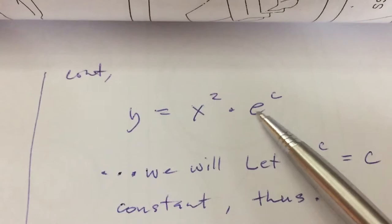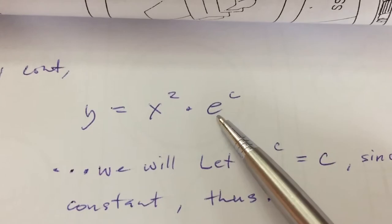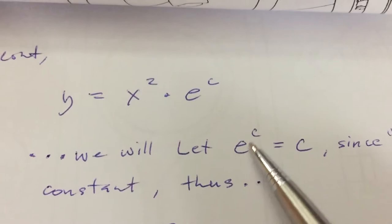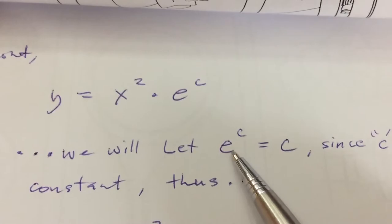x squared times e raised to the c. Although there is still an e there, we can eliminate that by letting e raised to the c equal to c, since c is a constant and it can be any constant.